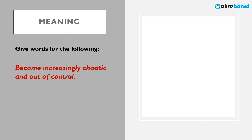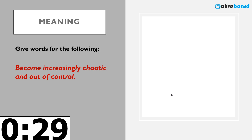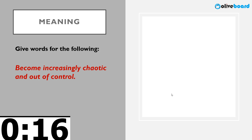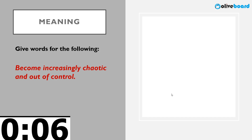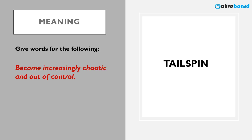Next: becoming increasingly chaotic — causing a lot of confusion, something which is out of control totally. The correct word is tailspin. Tailspin means extreme confusion when things are not in order, things are out of control. For example: an economy tailspinning into chaos — an economy going out of control.